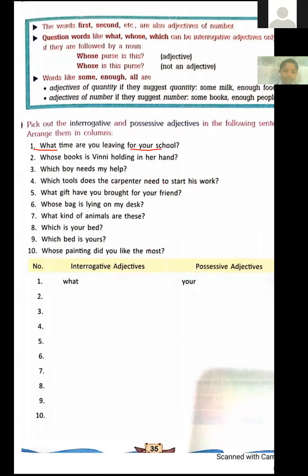Second sentence: 'Whose books are lying in her hand?' — Whose is followed by the noun books, so whose is an interrogative adjective. Her is showing belonging — 'her hand' — so her is a possessive adjective.